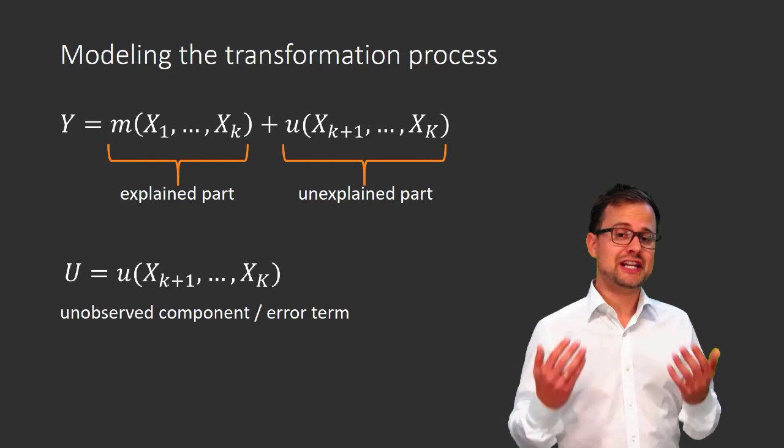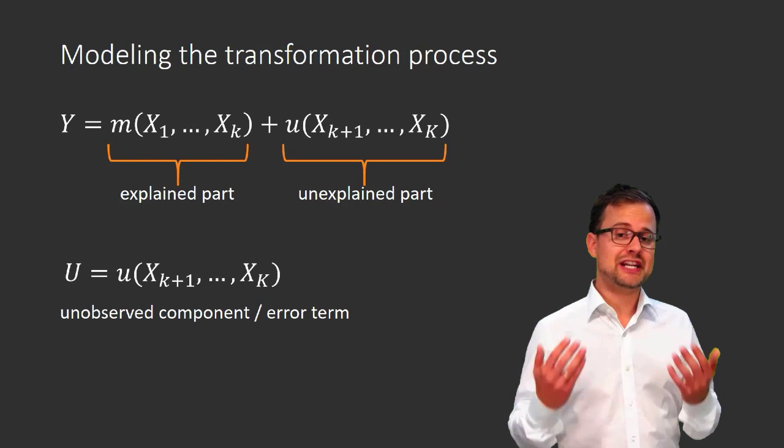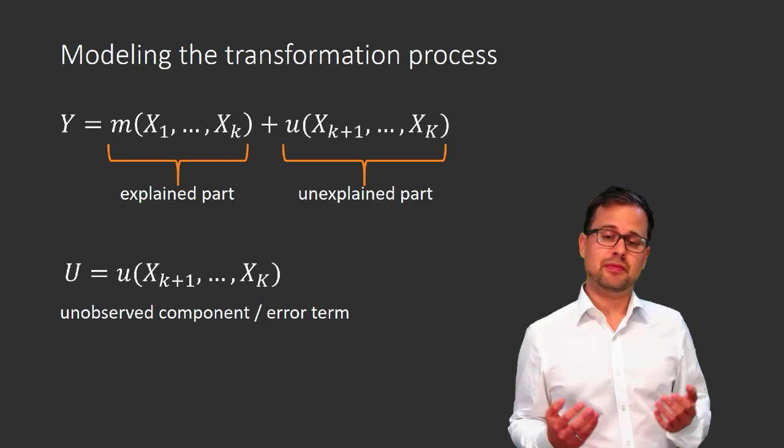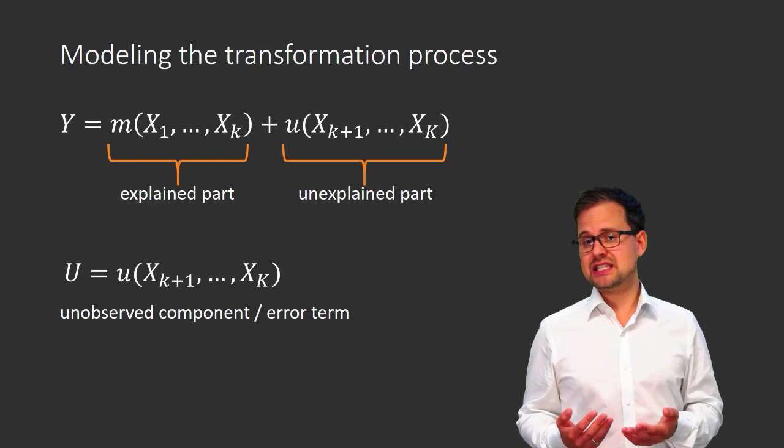The unobserved component u is the part of the transformation process that we cannot observe. Another common name for it is the error term — this is the term used in most textbooks, though I don't like it much because it's not very descriptive of what u economically stands for.